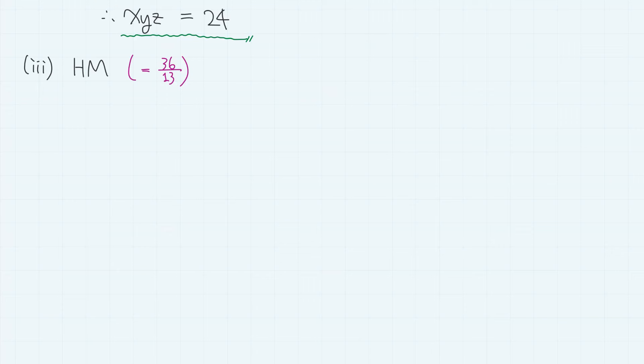Finally, the harmonic mean. It is obtained by first calculating the arithmetic mean of the reciprocals of 3 variables, and then by taking the reciprocal of the result again. This equals 36 over 13.